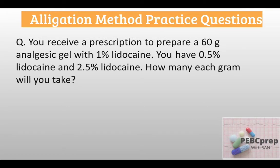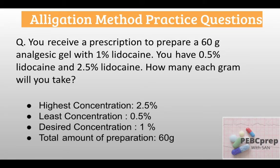Our first question: you receive a prescription to prepare a 60 gram analgesic gel with 1% lidocaine. You have 0.5% lidocaine and 2.5% lidocaine. How many grams of each will you take? We will extract four important pieces of information: highest concentration (2.5% lidocaine), least concentration (0.5% lidocaine), desired concentration (1% lidocaine), and total amount to prepare (60 grams).